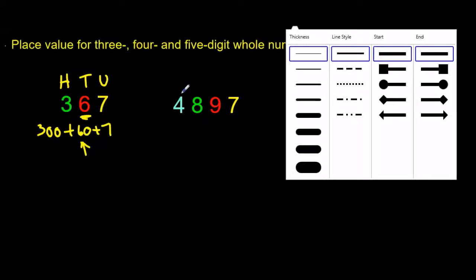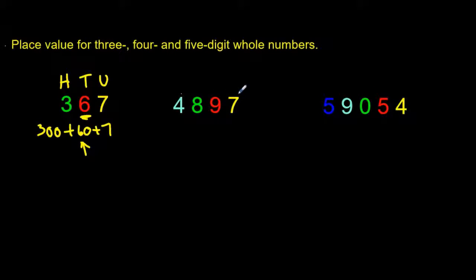If we have this number here, 4897, 7 is in the units column, the 9 is in the tens column, the 8 is in the hundreds column, and the 4 is in the thousands column.